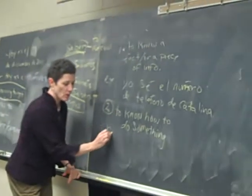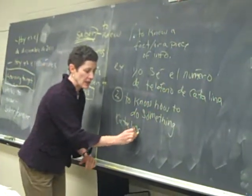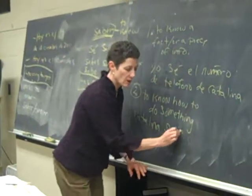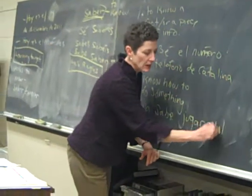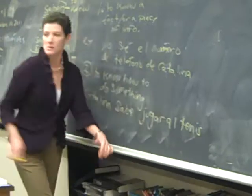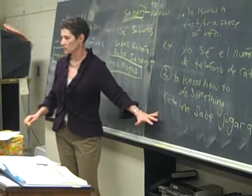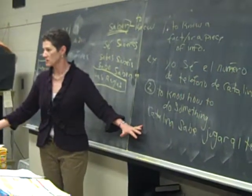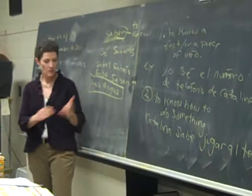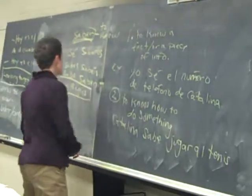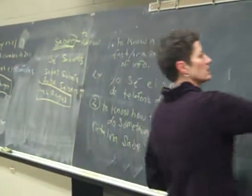So let's do it that way. We're picking on Catalina today. Catalina sabe jugar al tenis. Okay? So that's something she knows how to do. She knows how to play tennis. So pretty easy rules for saber. Right? Okay. Now, conocer is a little bit different.